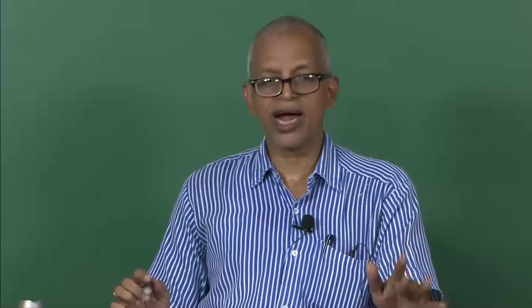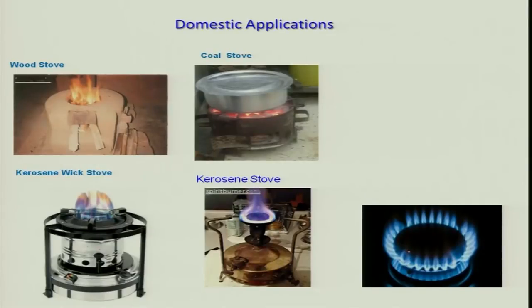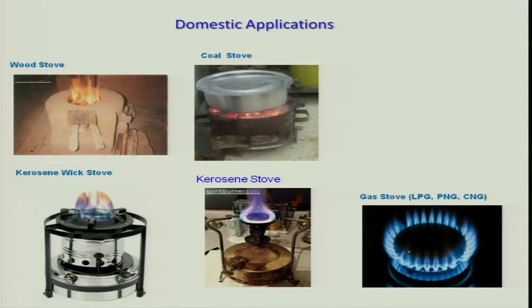This is your LPG stove, as you are aware. It is not only LPG — you can also use PNG (piped natural gas), CNG (compressed natural gas), or biogas. The design might be different. What will be the power range of this stove? Is it 0.5 kilowatt, 1, 2, 2.5, 4.5, or 5 kilowatt — what is the range?